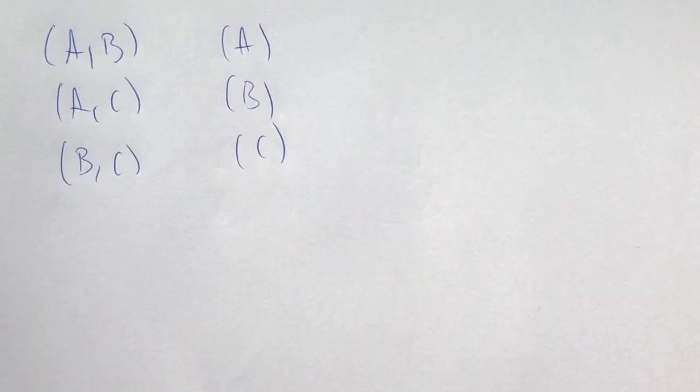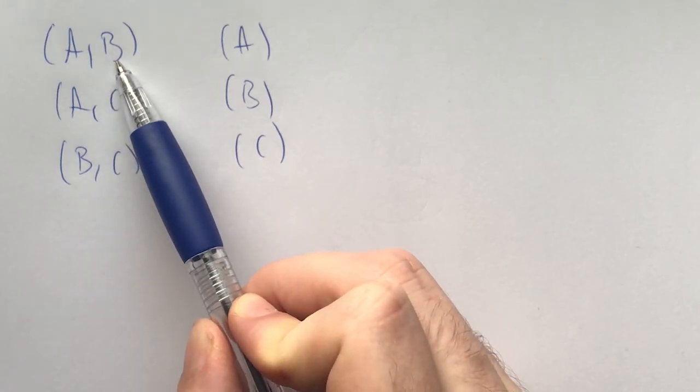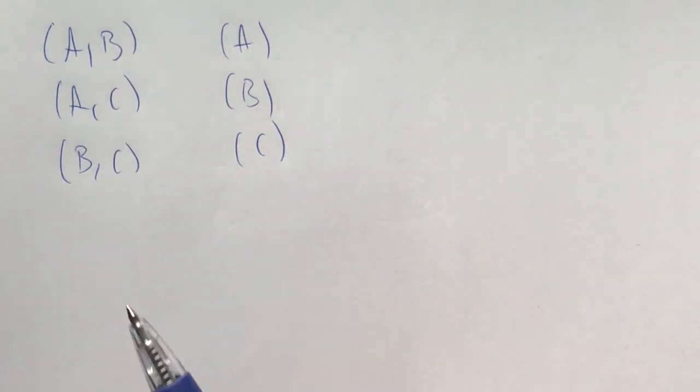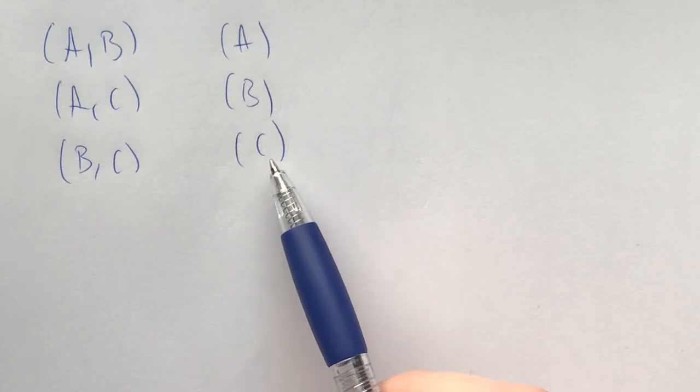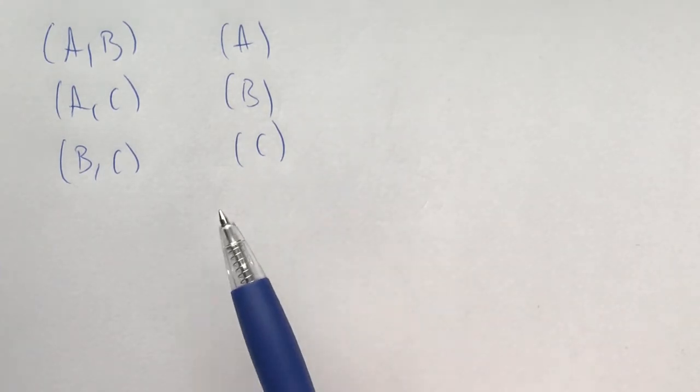Now another problem-solving strategy that we can use, that we might have used implicitly by playing around, is to look for similarities between things that are on the surface very different. Here this means that some questions are really the same even though they're different. What do I mean?